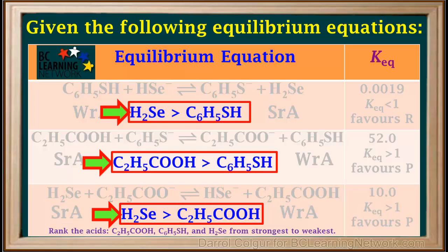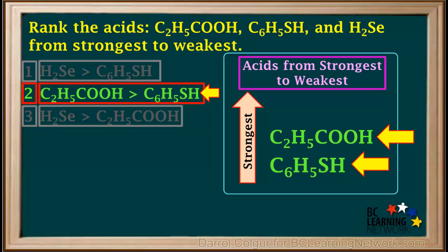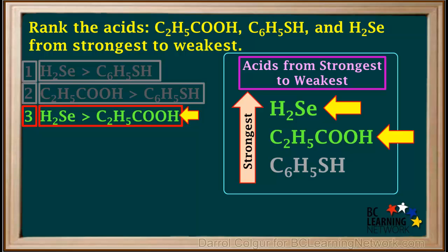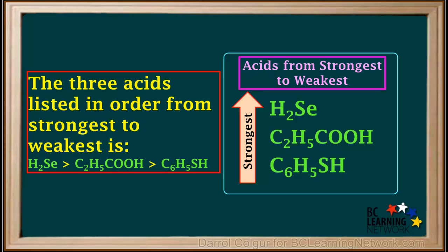Using these three statements, we can rank the three acids from strongest to weakest. Statement two tells us that C2H5COOH is stronger than C6H5SH, so we place it above C6H5SH. Statement three tells us that H2SE is stronger than C2H5COOH, so we place it above C2H5COOH. Finally, statement one verifies that H2SE is stronger than C6H5SH. So the three acids listed from strongest to weakest are: H2SE is stronger than C2H5COOH, which is stronger than C6H5SH.